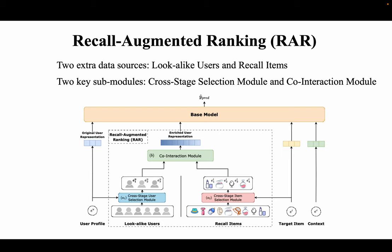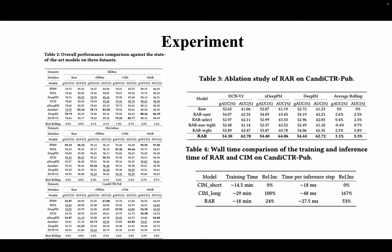RAR consists of two key components: the cross-stage user and item selection module and a co-interaction module. These sub-modules efficiently gather information from a large number of lookalike users and recall items, thereby enriching user representations. RAR serves as a framework capable of enhancing the performance of numerous existing CTR prediction models in a plug-and-play manner. Finally, we have done extensive experiments, including ablation studies and analyzing training efficiency, which show RAR's ultra-performance, effectiveness, and compatibility with a wide variety of models.